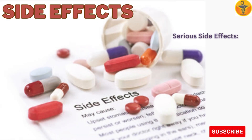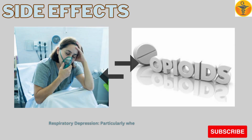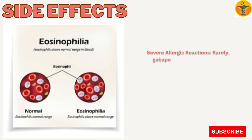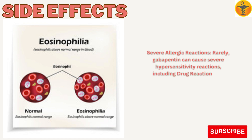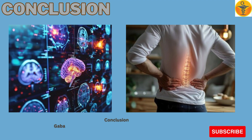Serious Side Effects. Respiratory Depression: This is particularly concerning when gabapentin is combined with other CNS depressants like opioids. Severe Allergic Reactions: Rarely, gabapentin can cause severe hypersensitivity reactions, including drug reaction with eosinophilia and systemic symptoms (DRESS).